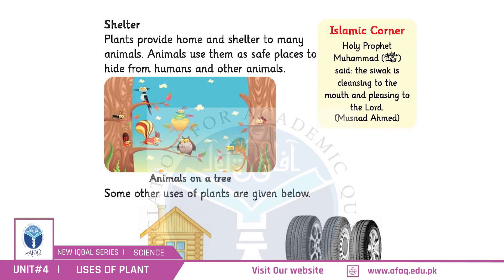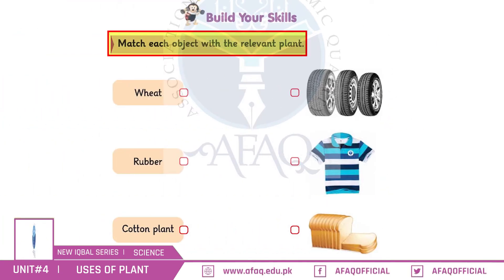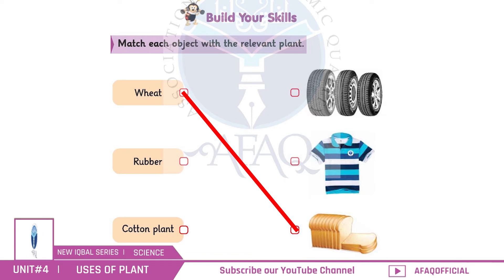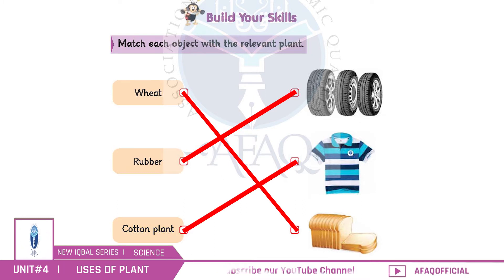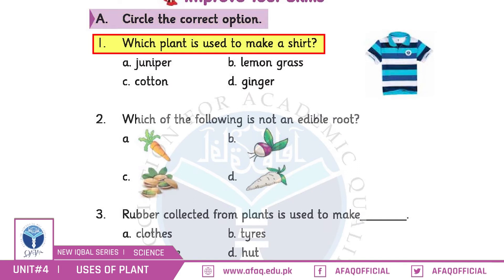Page number 19 — match the relevant pictures. Wheat is used for bread, very good. Rubber is used for tires, and cotton plant is used for shirts. Excellent, very good!